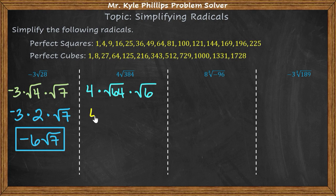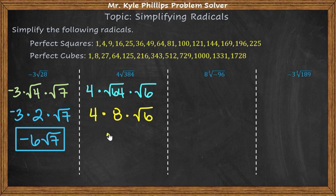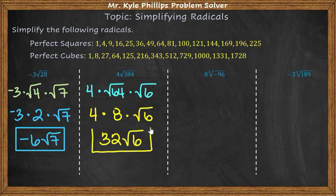The square root of 64 is 8, so we have 4 times 8 times the square root of 6. 4 times 8 is 32, giving us 32 times the square root of 6 as our simplified radical.